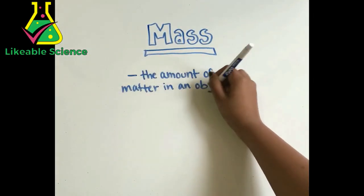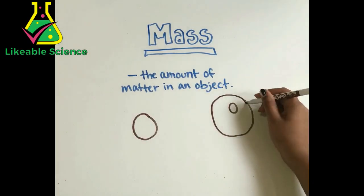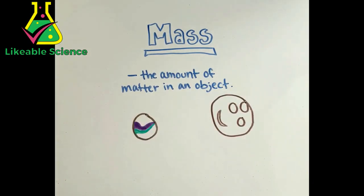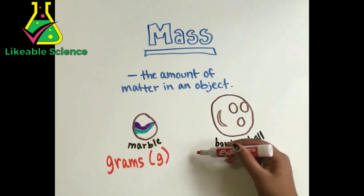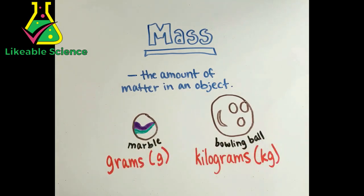Mass is the amount of matter in an object. Mass is measured in grams or kilograms. Small objects like marbles will be measured in grams because they're less heavy, and larger objects like bowling balls will be measured in kilograms because they might be heavier.